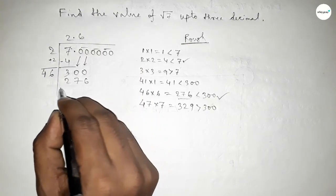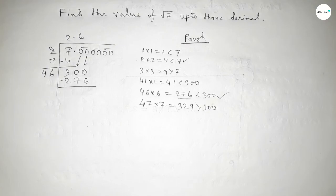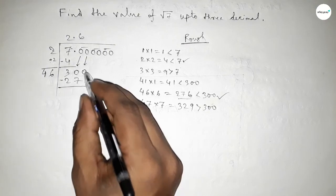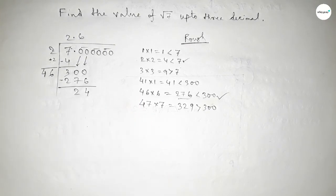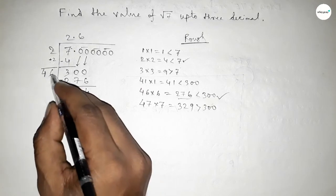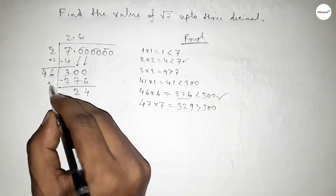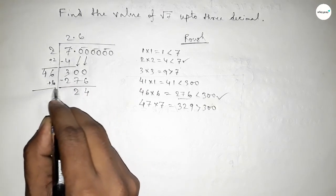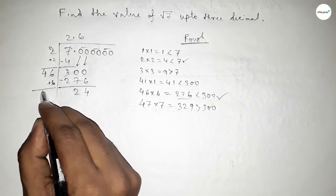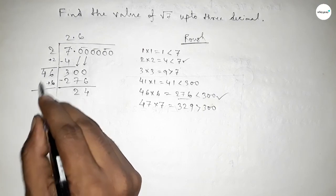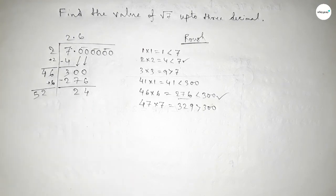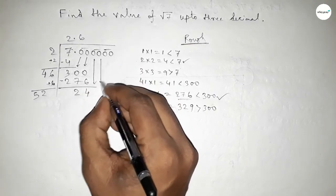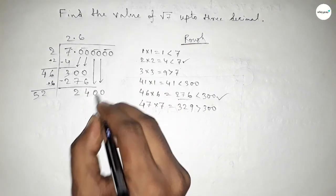We put 6 beside 4, so the divisor is 46. Multiplying: 46×6=276. Now subtracting — this gives remainder 24. Adding the last digit: the last digit is 6, so 6 plus 6 equals 12, giving us 52. Bringing down the next pair of zeros.